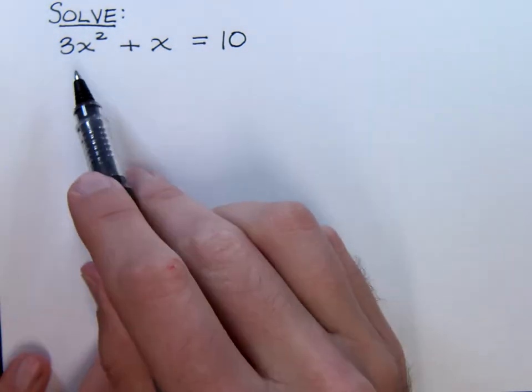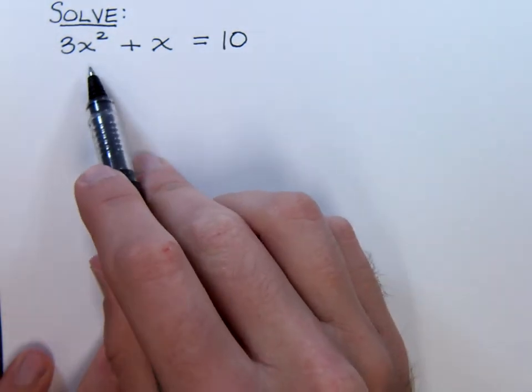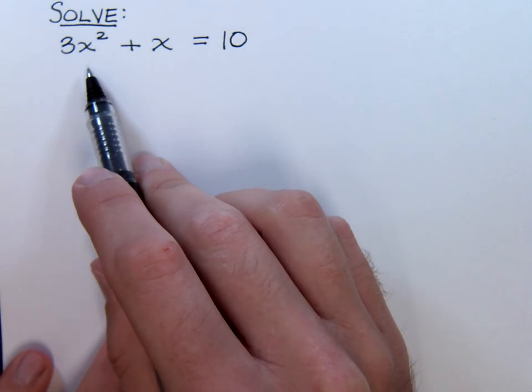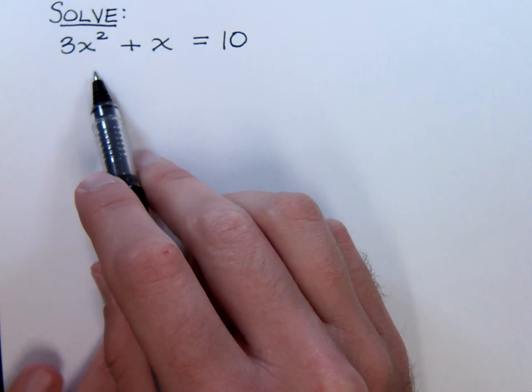Now to solve this quadratic equation, we first need to get everything to one side of the equation so that we have zero on the other side and apply the zero factor theorem.